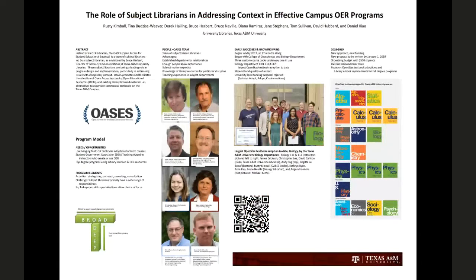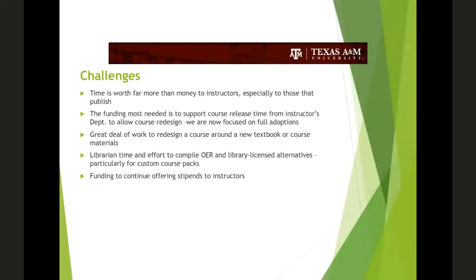Some of the challenges we ran into as a brand new program: we did have some startup money, but our stipend fund quickly became exhausted — a cost of success. We prepared a proposal to the university up to the provost and president last year, and ultimately that proposal failed, but we're preparing a new more streamlined version this year. The savings to students for Biology 111 and 112 is over $600,000 annually.